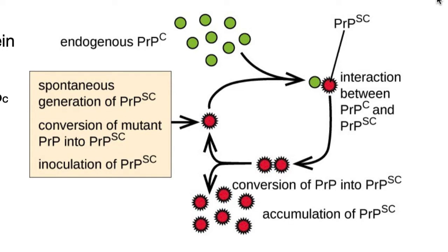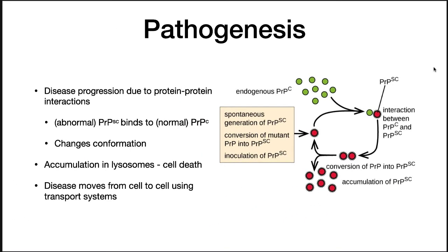In other words, abnormal PRP forces normal PRP to change shape. Abnormal PRP has a different shape, which makes it much more resistant to degradation by cellular proteases than normal PRP. It is thought that the accumulation of abnormal PRP in the lysosomes of brain cells somehow kills them, and when these cells die, they cause the characteristic holes in the brain seen in this type of prion disease.